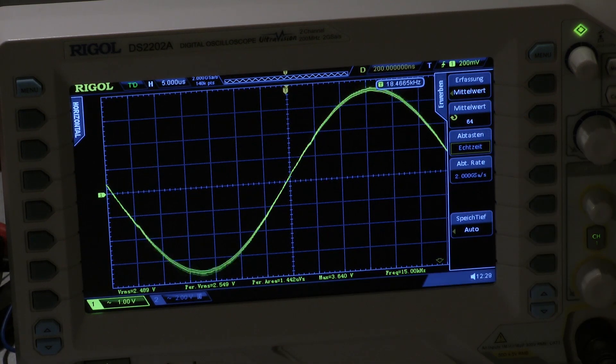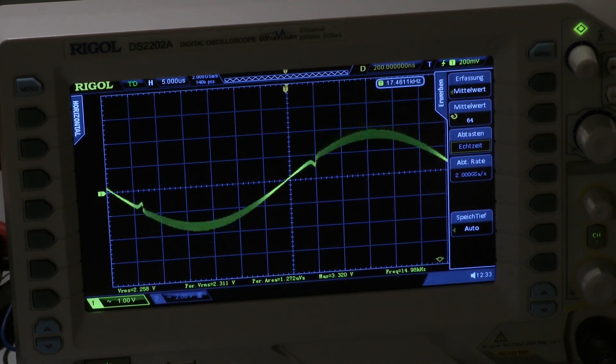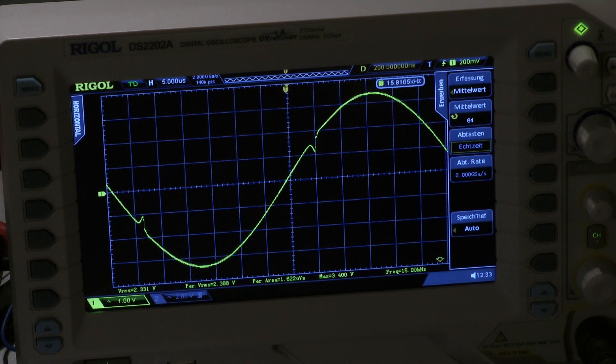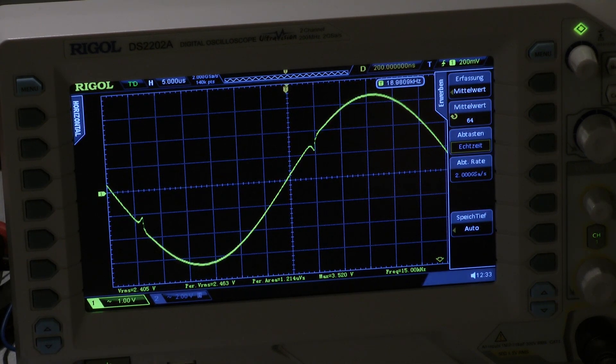Now I connect my scope and the load to the other channel. Here is my frequency and I turn the pot. And you can see it disappears slowly. I will leave a small bump.